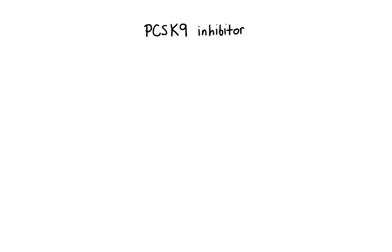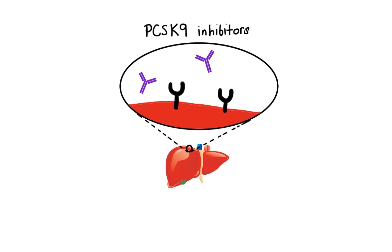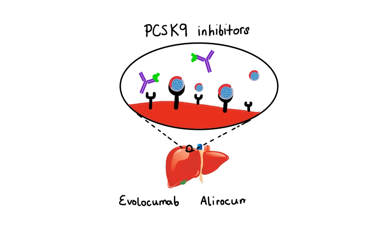The next group is PCSK9 inhibitors. PCSK9 is an enzyme circulating in the blood that binds to LDL receptors on the surface of liver cells and promotes their degradation, thereby reducing the removal of LDL from circulation. PCSK9 inhibitors are monoclonal antibodies that bind to and inactivate PCSK9. In the absence of PCSK9, more LDL receptors are available to bind and clear LDL from circulation, leading to decreased levels of LDL cholesterol. Examples include evolocumab and alirocumab. Reported side effects include injection site reactions, flu-like symptoms, and some neurocognitive problems.